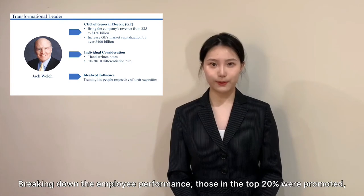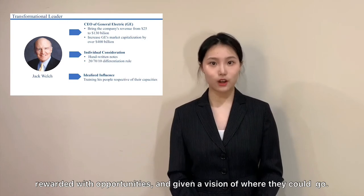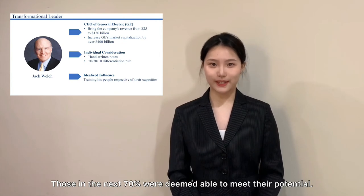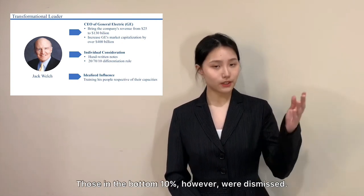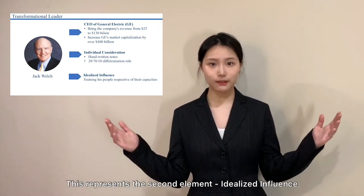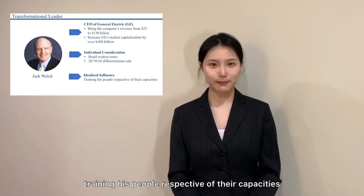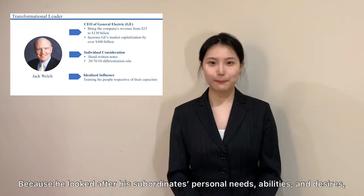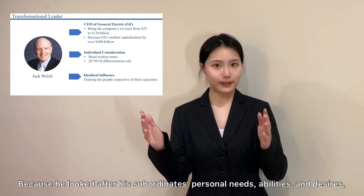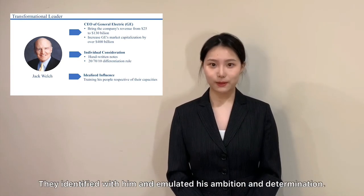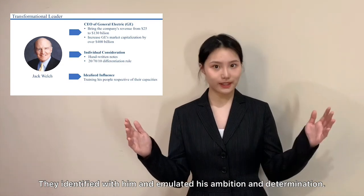Jack's 20-70-10 differentiation rule was another effective tool. Breaking down employee performance, those in the top 20% were promoted, rewarded with opportunities, and given a vision of where they could go. Those in the next 70% were deemed able to meet their potential. Those in the bottom 20%, however, were dismissed. This represents the second element, idealized influence — training his people respective of their capacities while considering the company's overall welfare. Because he looked after his people's personal needs, abilities, and desires, they in turn saw him as a role model and emulated his ambition and determination.